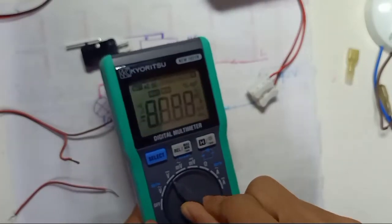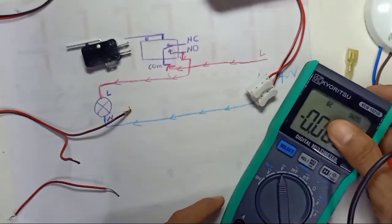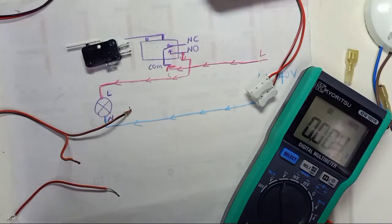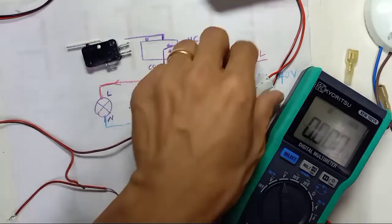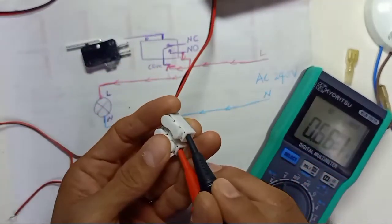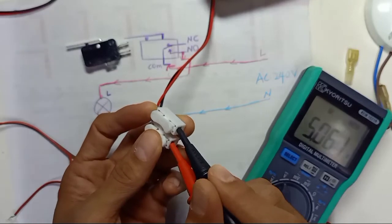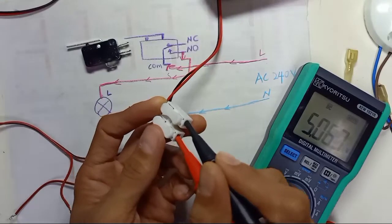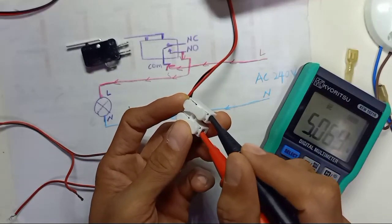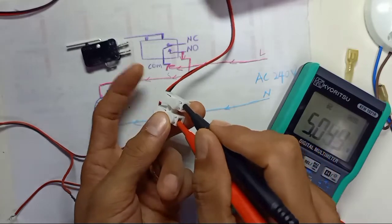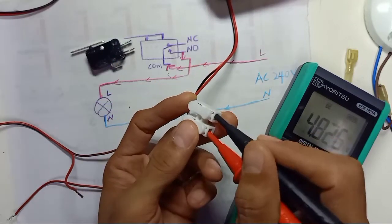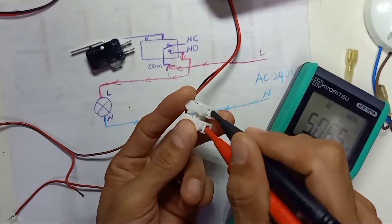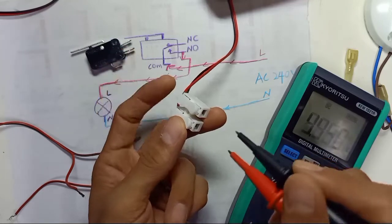Now I'm going to use DC voltage. Let me test my DC supply. I get 5 volts. You can use 5 volt or 12 volt — it doesn't matter how many volts you use, the switch can handle it. It can handle 12 volt, 24 volt, 240 volt, both AC and DC, for this type of micro switch.